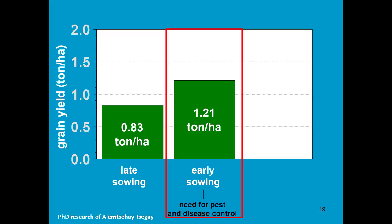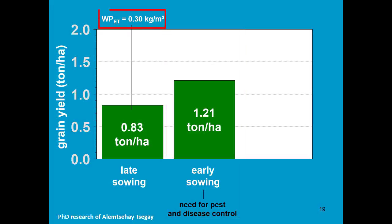After calibrating and validating AquaCrop for tef with the help of experimental fields, you can run AquaCrop for many years to see the yield variations from one year to the other. The ET water productivity increased from 0.3 to 0.4 kg per cubic meter of water.